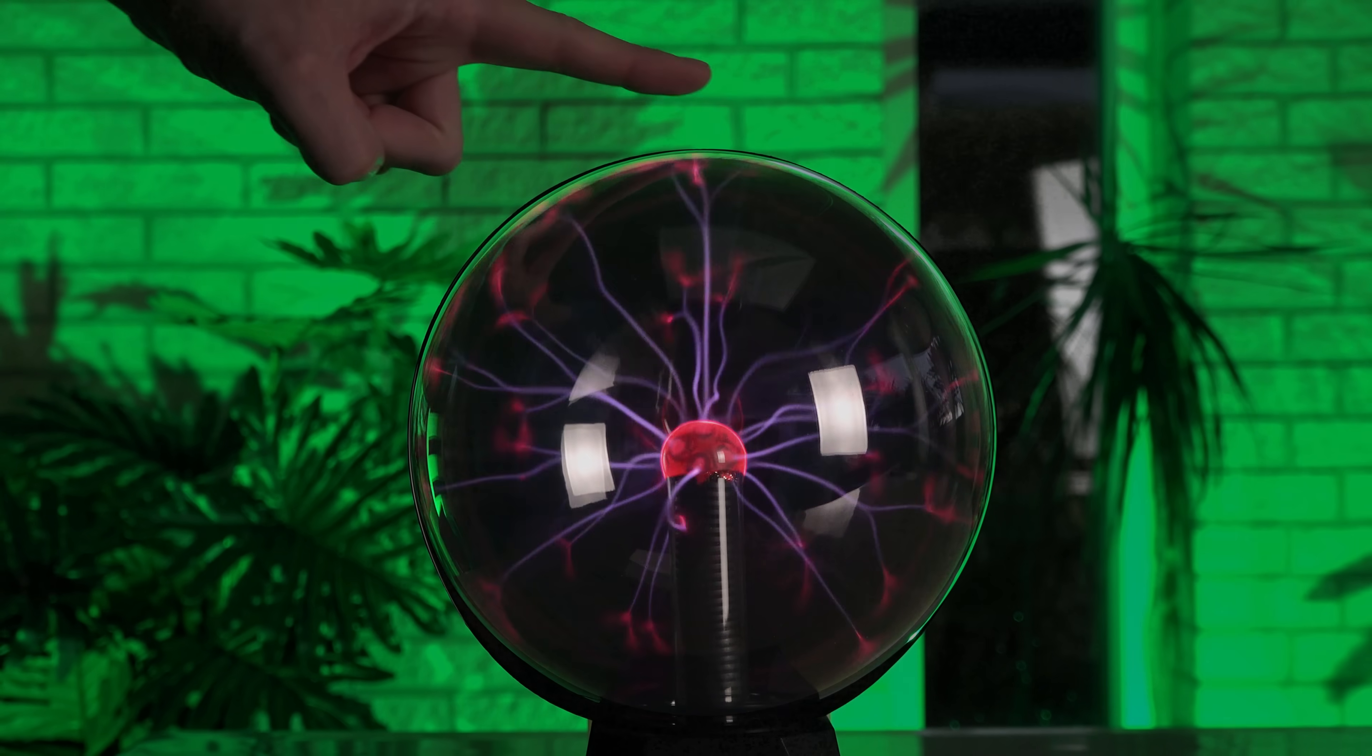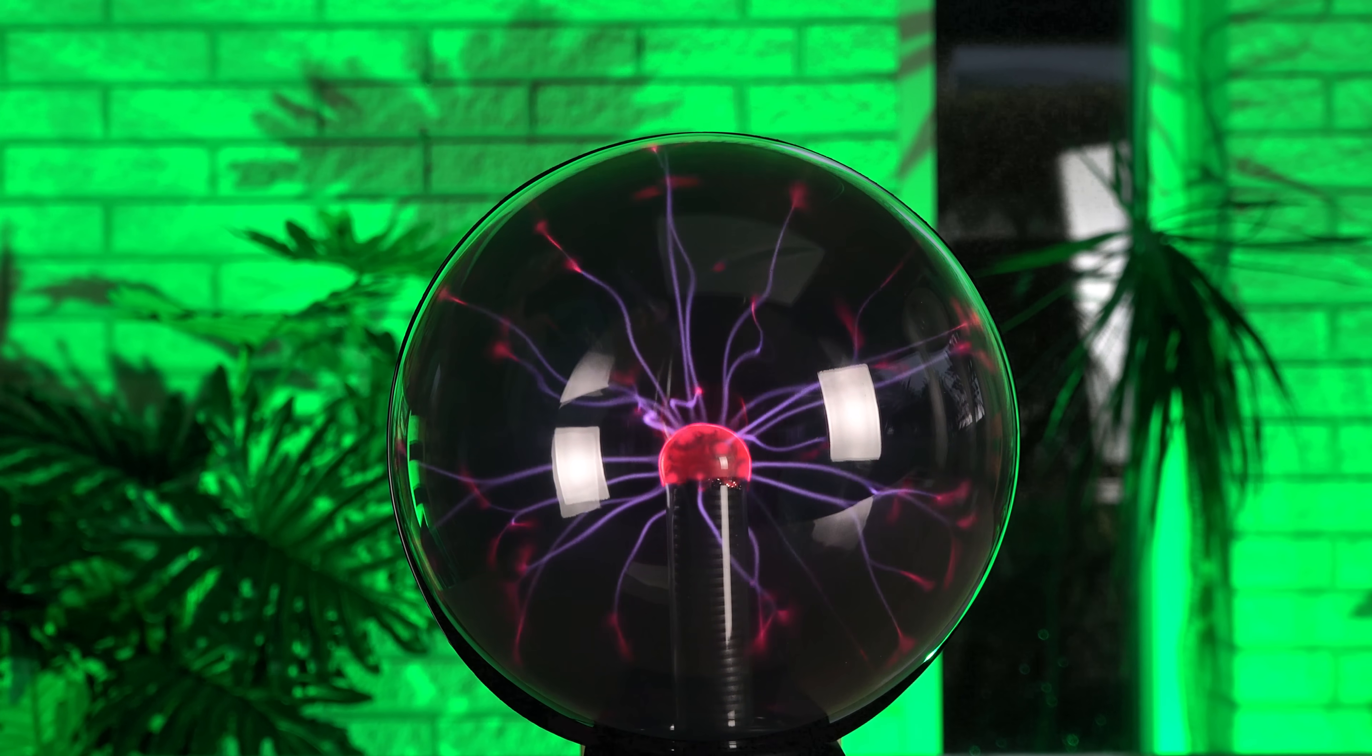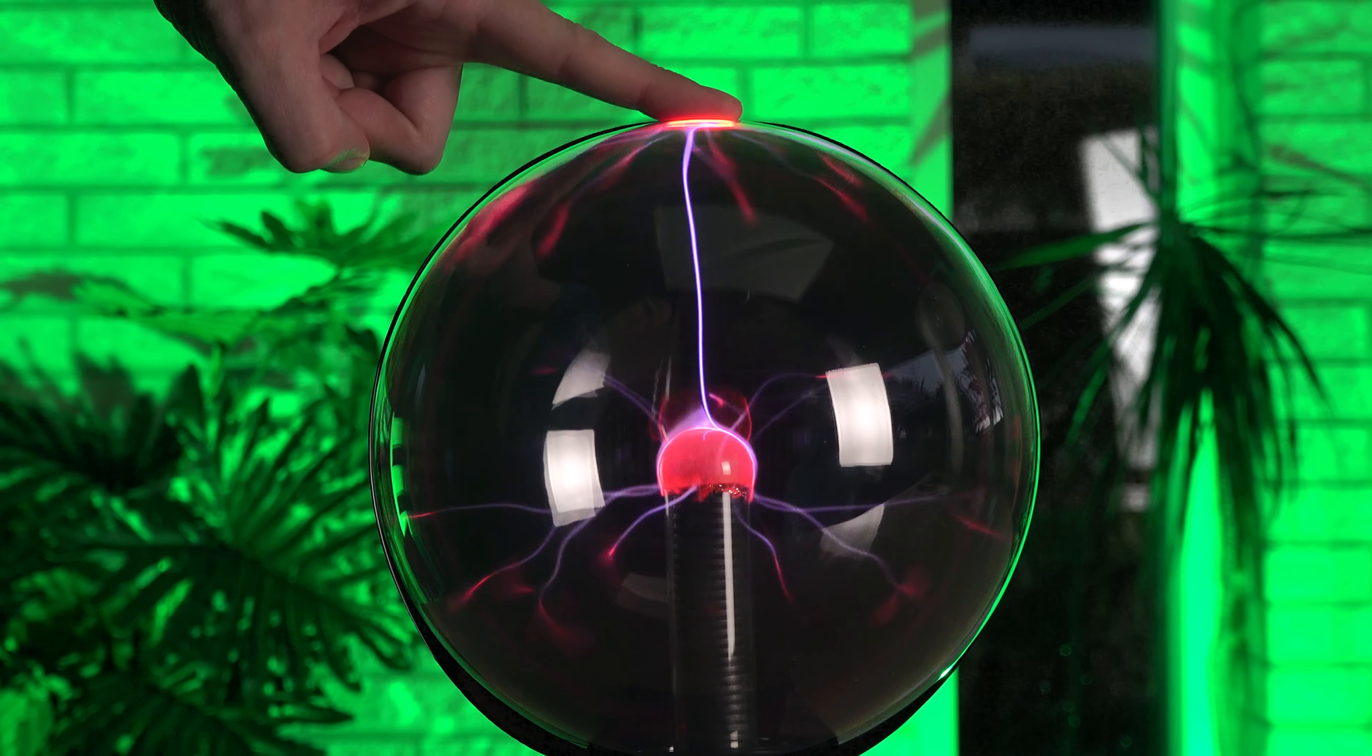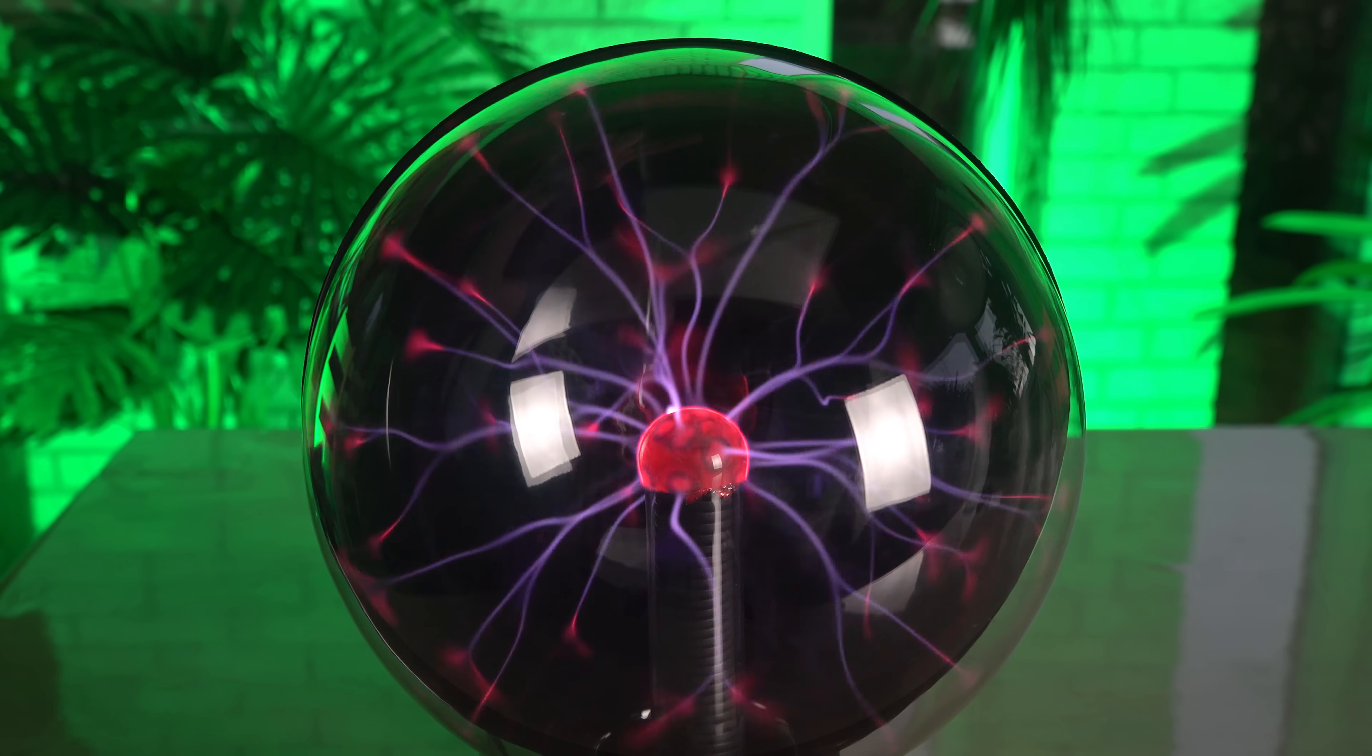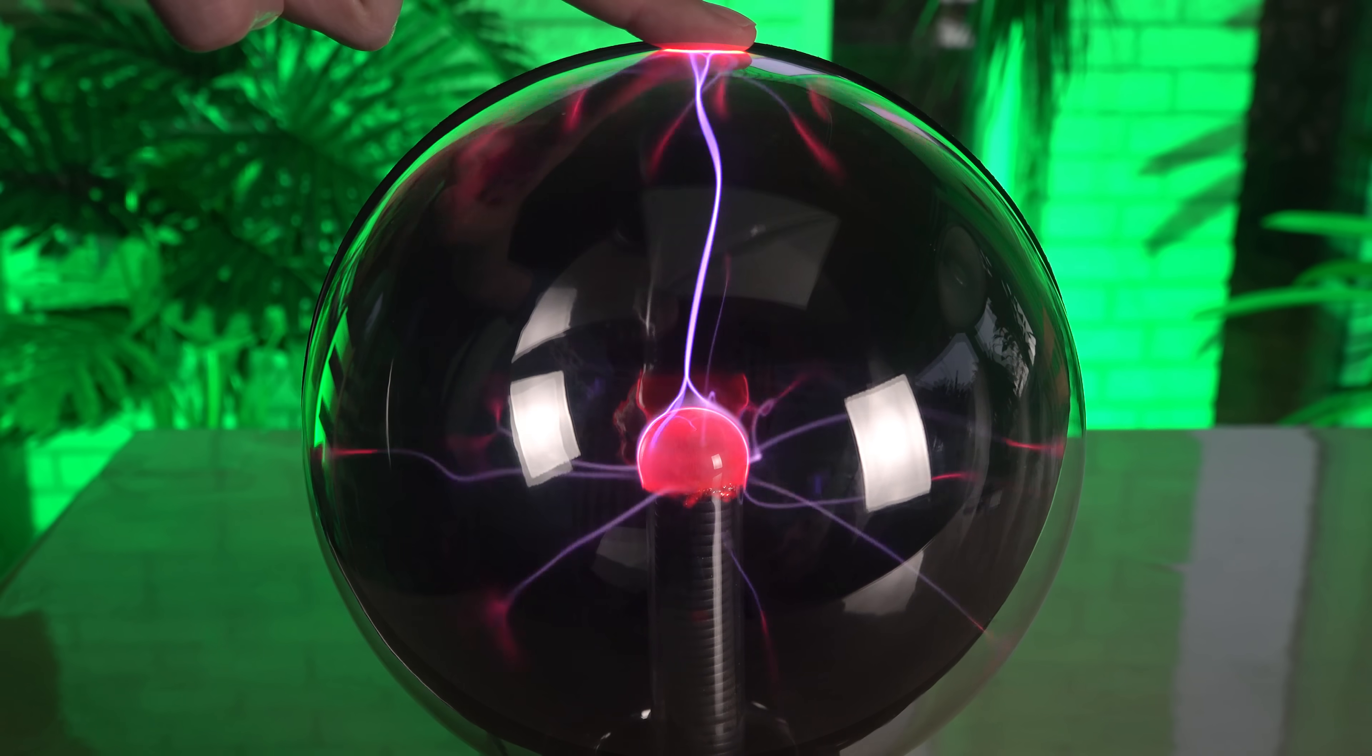I am still as mesmerized by plasma globes as when I was a kid. I feel like four when my finger can gather the filaments into a solid lightning strike inside the globe. But why can I do this? I am not getting shocked by the electricity, which seems to stay inside the non-conductive glass globe. Is there something going on outside the glass sphere?